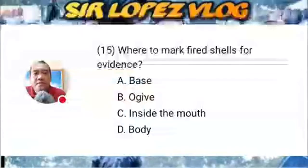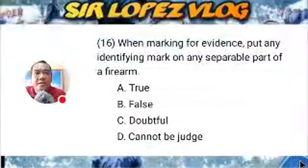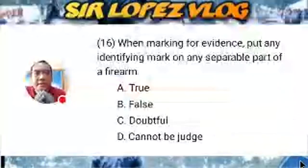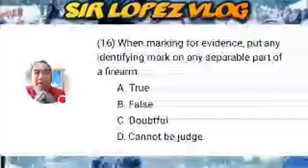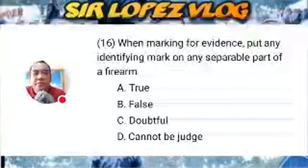Question number sixteen: When marking for evidence, put any identifying mark on any separable part of a firearm. A) true, B) false, C) doubtful, or D) cannot be judged?